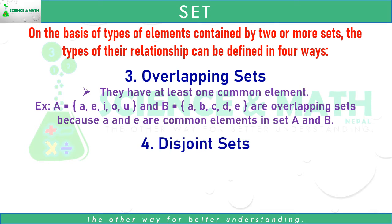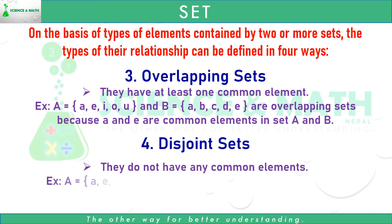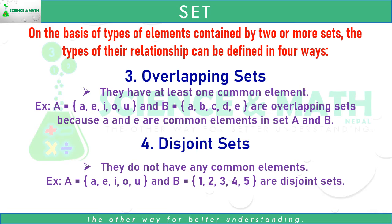Number four: different sets. Different sets do not have any common elements. For example, A equals the set of A, E, I, O, U and B equals the set of 1, 2, 3, 4, 5. Here, there is no common element between set A and set B, so they are different sets.